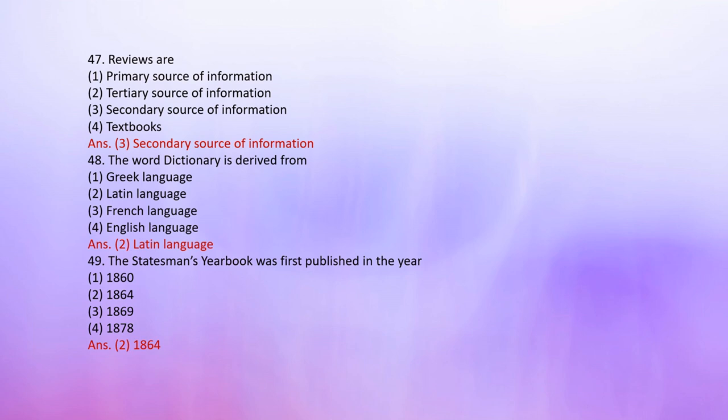Number 49: The Statesman's Yearbook was first published in the year — 1. 1860, 2. 1864, 3. 1869, 4. 1878. The correct answer is 1874.